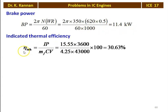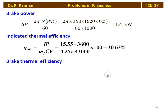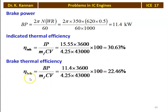The indicated thermal efficiency η_I = IP / (mass of fuel × calorific value) = 15.5 × 3600 / (4.25 × 43,000) × 100 = 30.63 percentage. The brake thermal efficiency = brake power / (M_F × CV) = 11.4 × 3600 / (4.25 × 43,000) × 100 = 22.46 percentage.